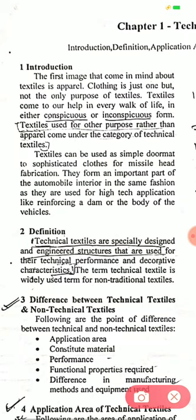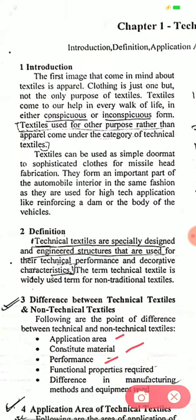Now, the difference between technical textiles and non-technical textiles. The main differences are in application areas, constituent materials, performance requirements, and functional properties required, which are very specific for technical textiles. There are also differences in manufacturing method and equipment used.